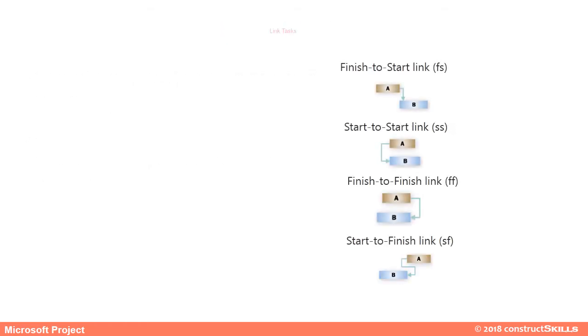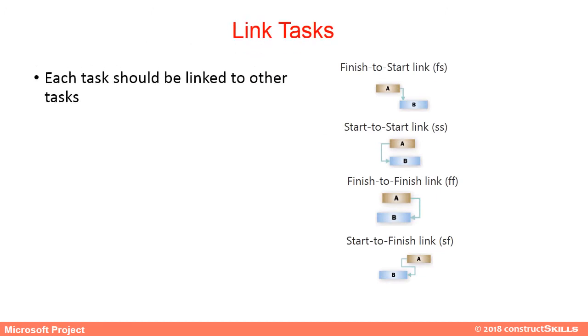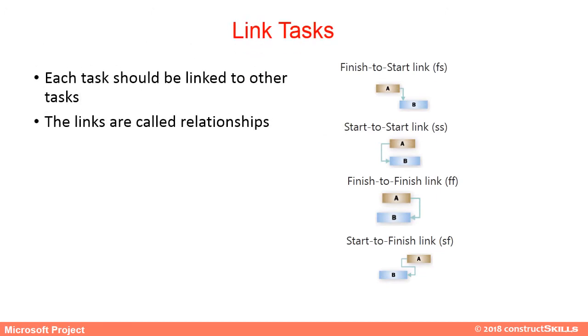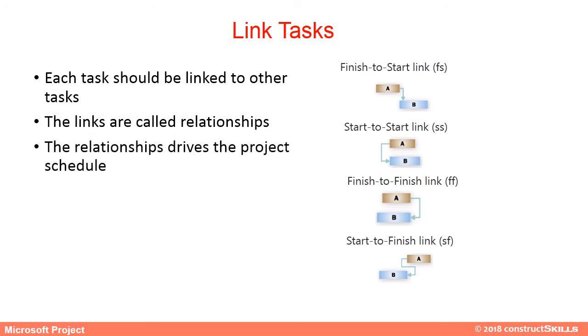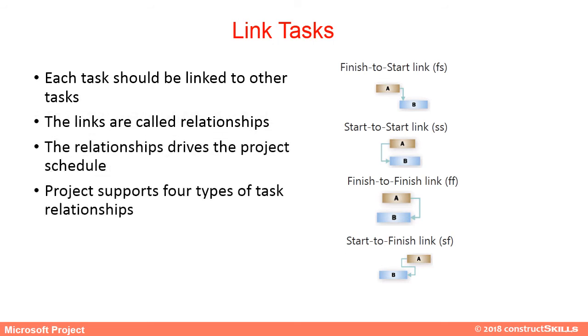In a schedule, each and every task should be linked to other tasks. These links are called relationships, and the relationships drive the project schedule. MS Project supports four types of task relationships.